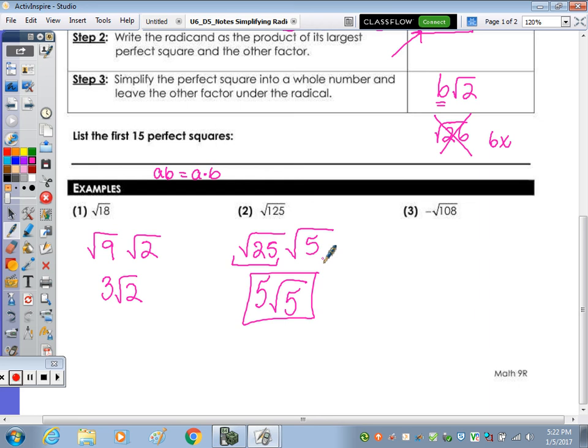And now the next one, 108. What's the largest perfect square factor of 108? The largest perfect square factor of 108 is going to be 36 times 3. So you break it down, square root of 36 is 6, so it's going to be negative 6 radical 3.